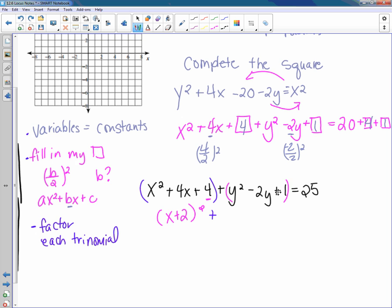Now we want to do the same thing for the y. We're looking for factors of 1 that will sum negative 2. Good news is factors of 1 are only 1 and 1. So how can I get them to sum negative 2? Make it negative 1. So that's (y - 1)², and that equals 25.